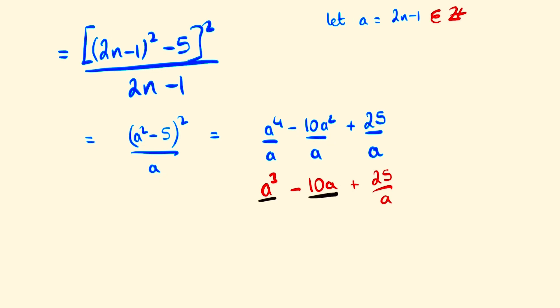Since these two terms in the front will be integers we are forced to have a dividing 25 so that must mean then that a can equal plus or minus 1 plus or minus 5 or plus or minus 25. By substituting a as 2n minus 1 to rearrange and solve for n we end up with the solutions minus 12, minus 2, 0, 1, 3, and 13.